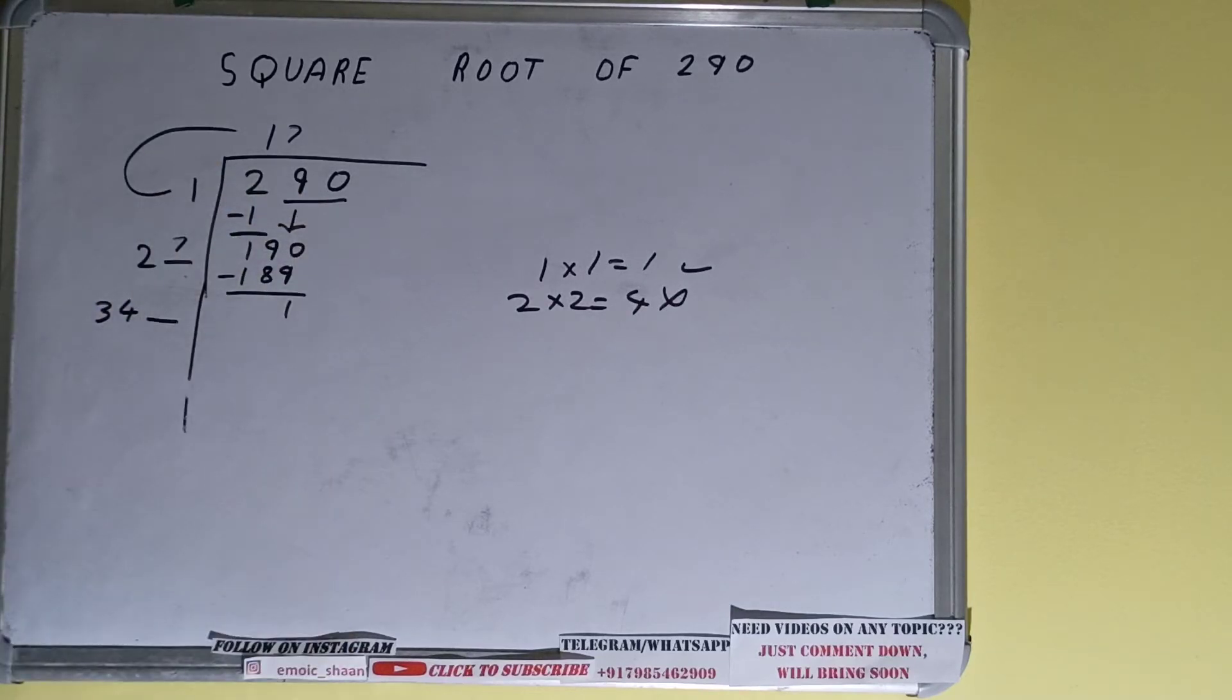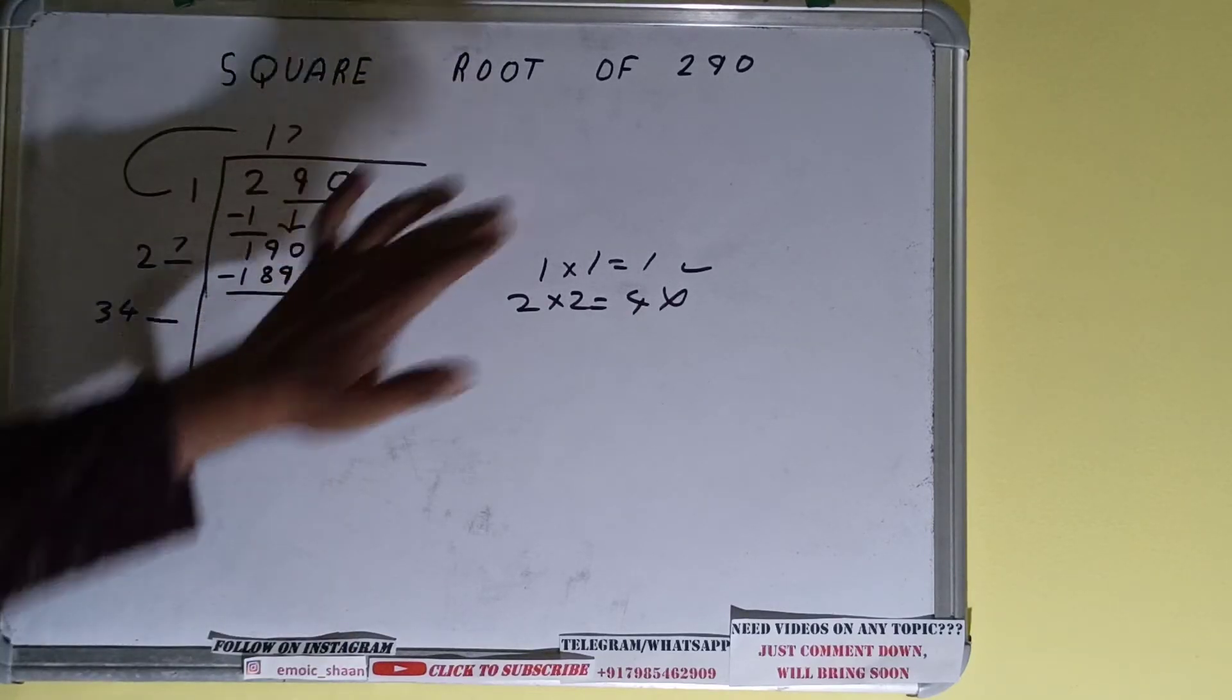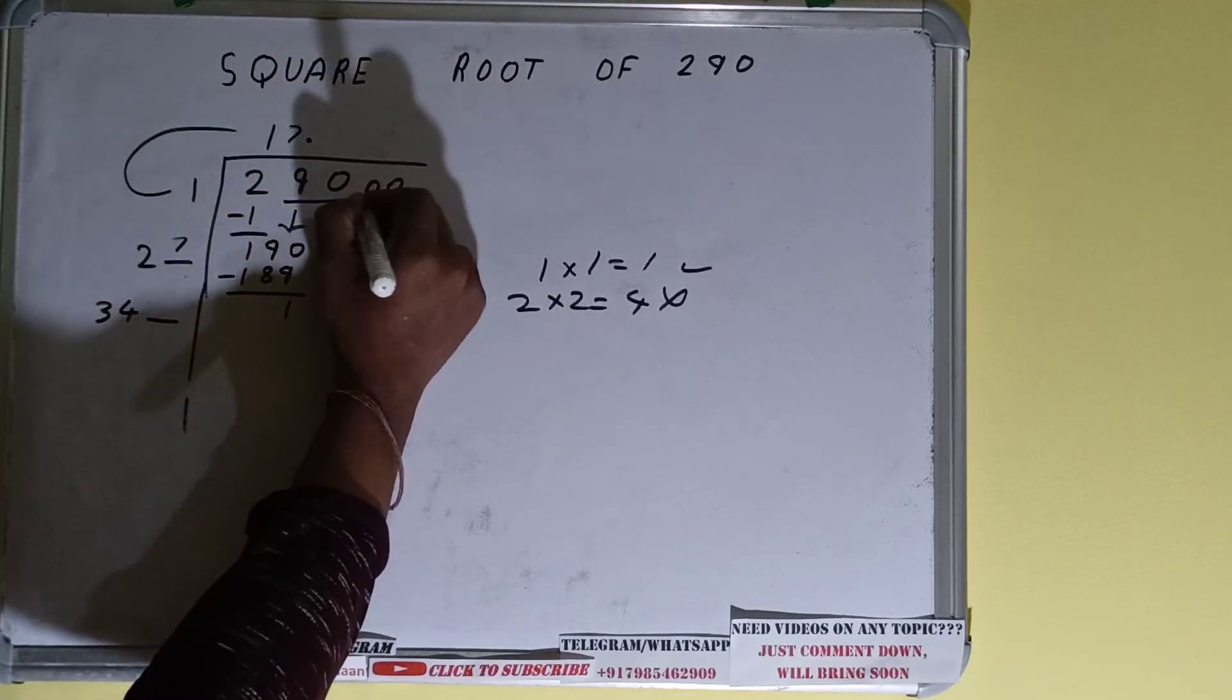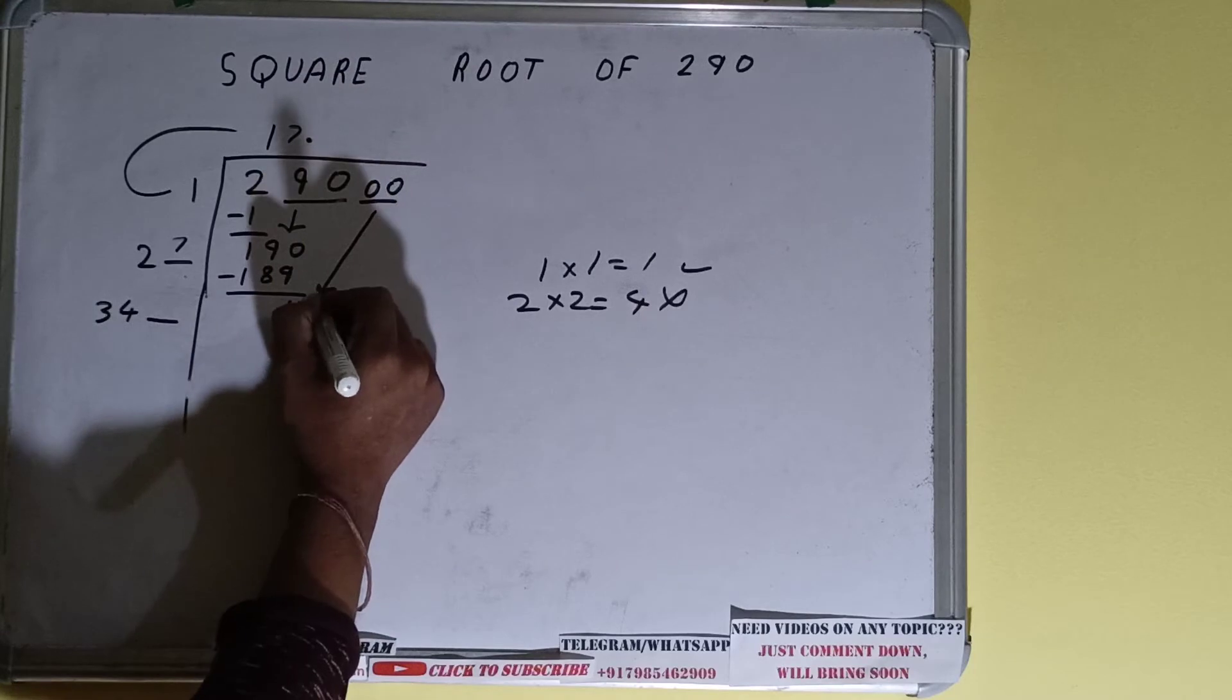We need to make this number big so that we can divide but we don't have any more pairs here. So what we'll do is we'll put decimal. Once we put decimal we can bring down pair of zeros and number will become 100.